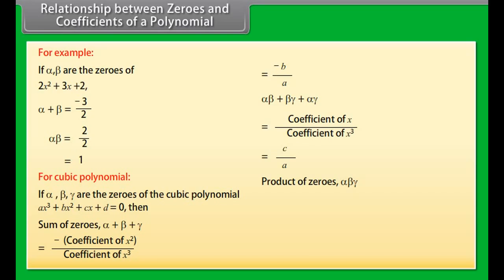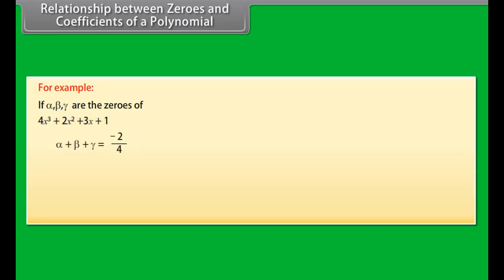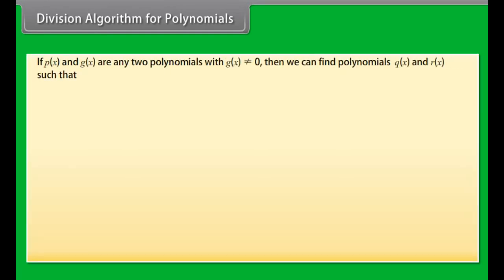For a cubic polynomial ax³ + bx² + cx + d = 0, if α, β, γ are the zeros, then: the sum of zeros α + β + γ equals minus the coefficient of x² upon the coefficient of x³, which equals −b/a. Also, αβ + βγ + αγ equals the coefficient of x upon the coefficient of x³, which equals c/a. The product of zeros αβγ equals minus the constant term upon the coefficient of x³, which equals −d/a.